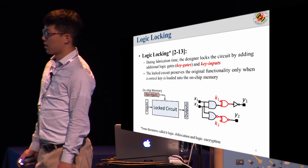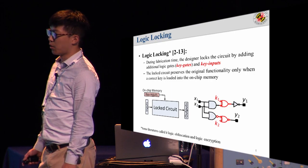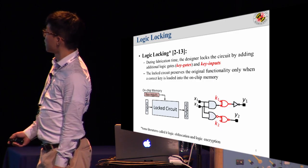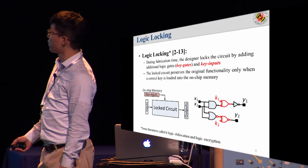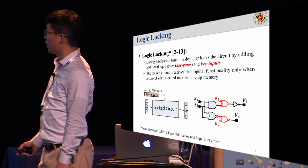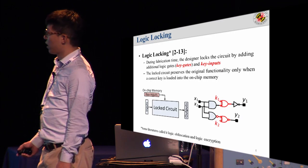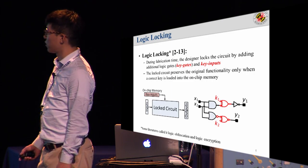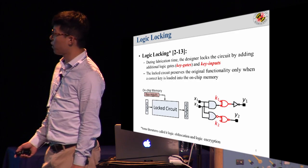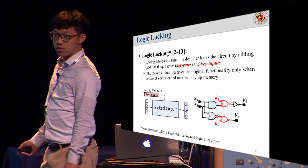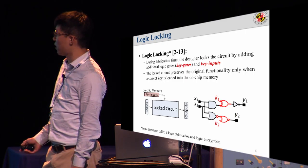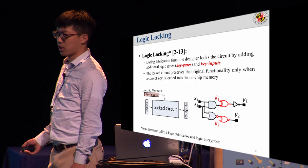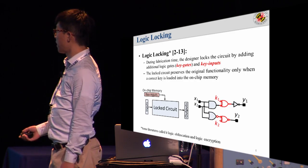Various countermeasures have been proposed, and logic locking is one of the preventive techniques. The basic idea is that during design time, the designer locks their circuit by adding additional logic gates called key gates and adding key inputs. The locked circuit preserves the original functionality only when a correct key is loaded into the on-chip memory. The left figure shows an overview of the locked circuit, and the right figure shows an example of inserting key gates and key inputs. Without a correct key, the attacker in the foundry cannot understand the functionality and cannot pirate the IP.